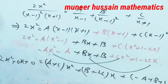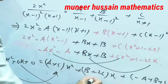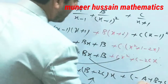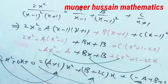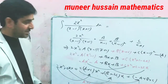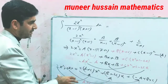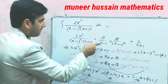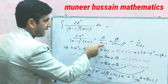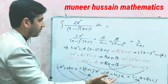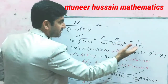As it is an identity, comparing coefficients: 2 equals a plus c for x squared, 0 equals b minus 2c for x, and 0 equals minus a plus b plus c for the constant. Mostly students don't understand, but it is very easy. We shall put x minus 1 equal to 0, so x equals 1, and x plus 1 equal to 0, so x equals minus 1.